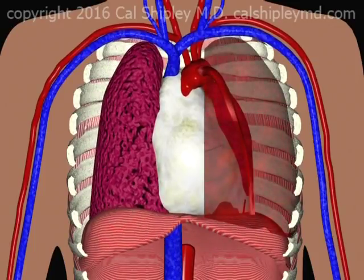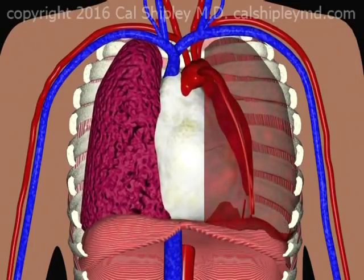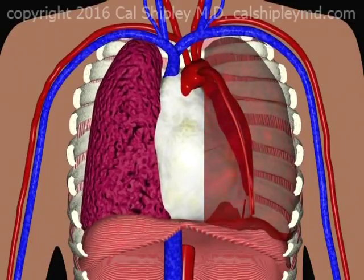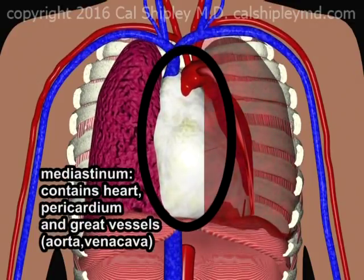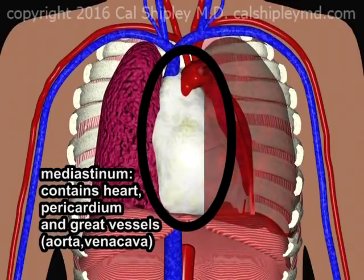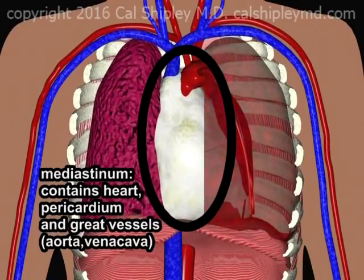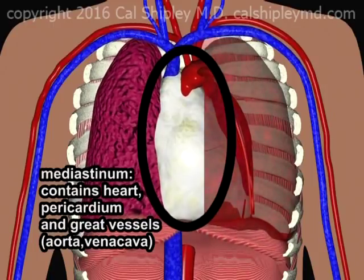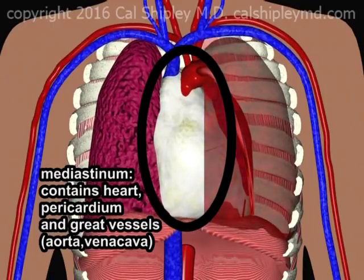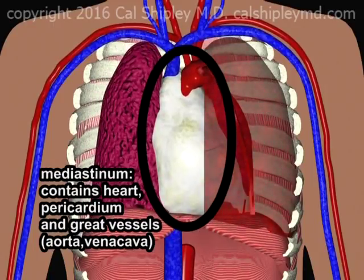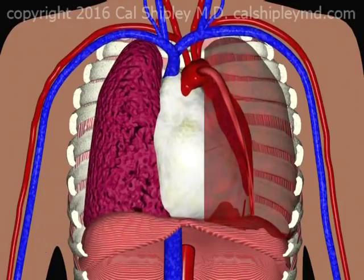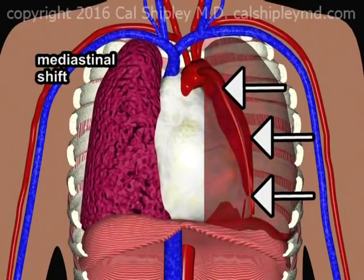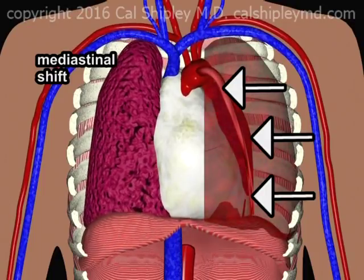Once the lung has collapsed, there is no further space within the hemithorax for the blood to occupy. As a result, pressure is exerted against the soft tissue structures of the mediastinum — namely, the heart contained within the pericardial sac, and the great vessels, the aorta and the vena cava, and their branches. This phenomenon is known as a mediastinal shift and may be viewed on plain film chest X-ray.